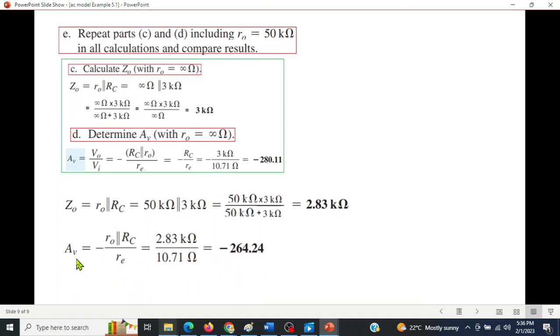Similarly A_v, again r_o || R_C, now r_o will be 50 kΩ. We have to actually calculate this which we had calculated already to be 2.83. So 2.83 / r_e, the answer is -264.24 as against -280, so this is also reduced in the negative sense. I hope you have been able to follow this, thank you.